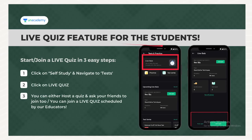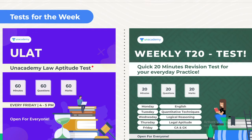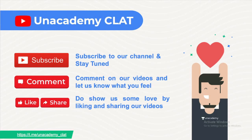The live quiz feature has also been launched — just follow the steps and participate. The Unacademy Law Aptitude Test will be held every Friday from 4 to 5 PM, make sure you attend; it is open for everyone. The weekly T20 test — I know most of you are attending this. You all know the schedule for which day we have which exam, and this will be posted on the Unacademy Telegram channel as well.